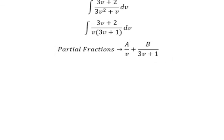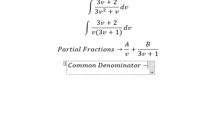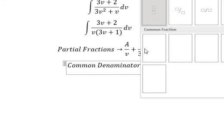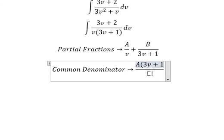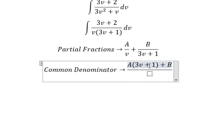Capital B over 3v plus 1. Next, we do common denominator.